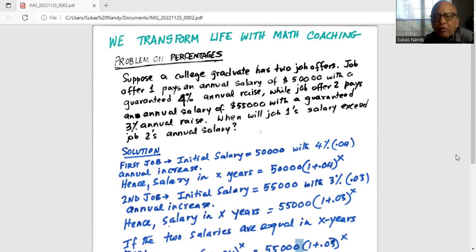When will job one's salary exceed job two's annual salary? First job: initial salary is $50,000 with 4% or 0.04 annual increase. Salary in X years will be $50,000 multiplied by 1 plus 0.04 to the power of X because there is compounded growth. So it's $50,000 multiplied by 1.04 exponent X.